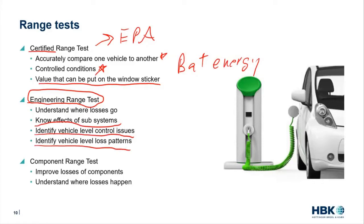What does this mean? A vehicle doesn't just have one motor — it might have four wheel motors, two axle motors, heating, air conditioning, auxiliary systems, heated seats, cooling pumps, all the stuff we enjoy. We want to understand how each of those interact so we can make changes to the vehicle level control and maximize range for a given component. Or if a component is really poor, we might want to change that component, update a control, or do individual component tests to understand how they use energy.